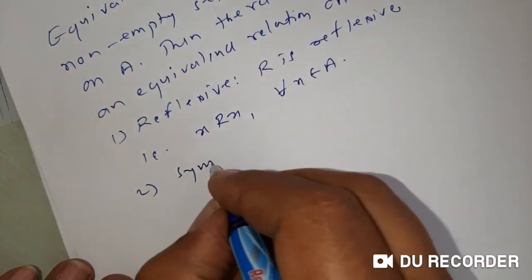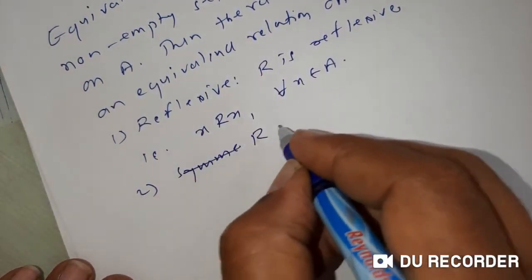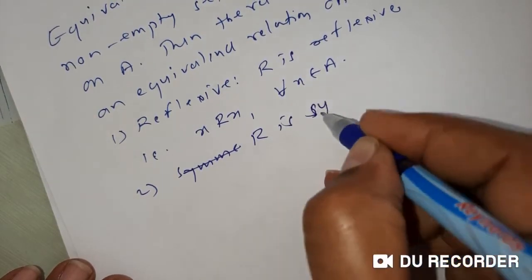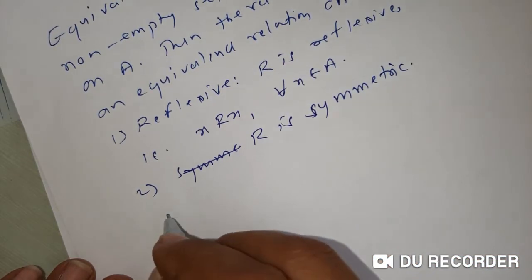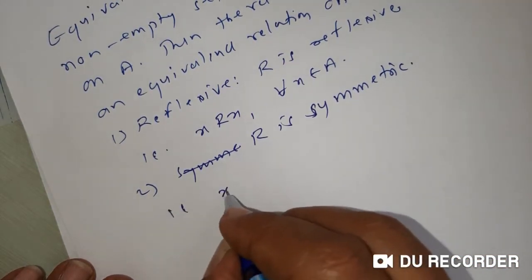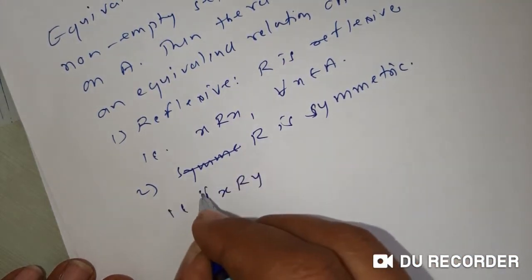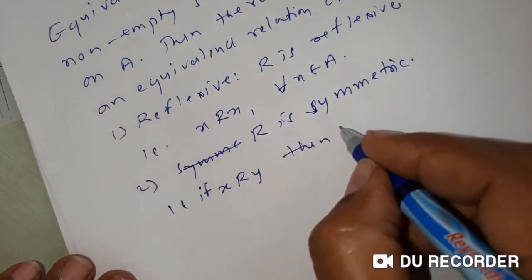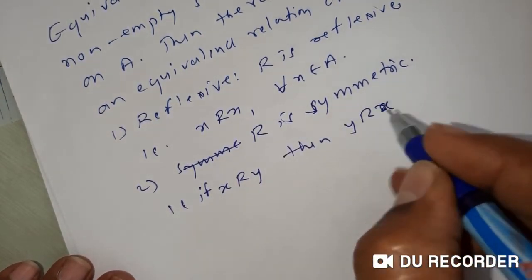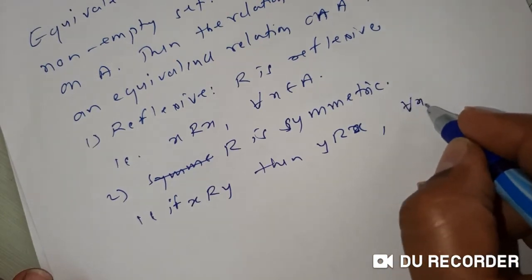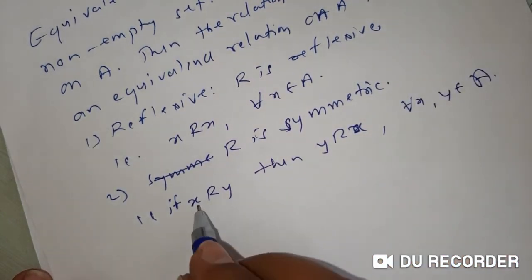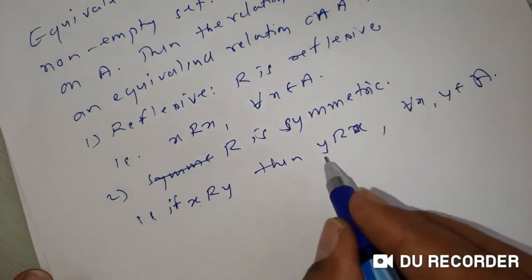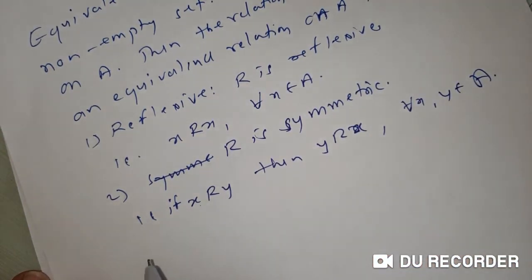Property number two: R is symmetric. That is, if x is related to y then y is related to x, and this is true for all x and y belonging to A. In other words, if one element is related to another, then the second is also related to the first. Then we say the relation is symmetric.